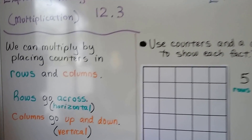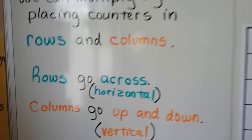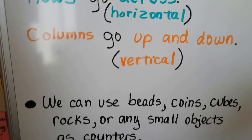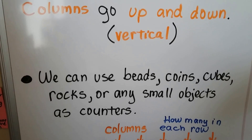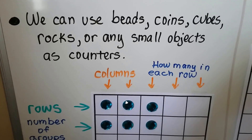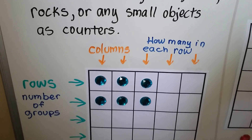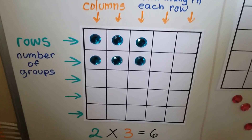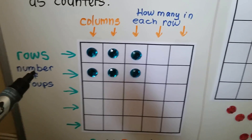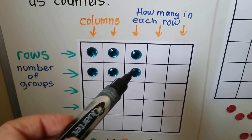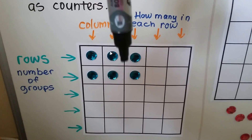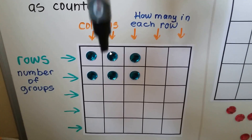We can multiply by placing counters in rows and columns on a grid. Rows go across — they're horizontal — and columns go up and down — that's vertical. We can use beads, coins, cubes, rocks, or any small objects as counters. I'm going to use my gems and some geometric shapes. The rows going across represent the number of groups, and the columns going down represent how many are in each group or in each row.